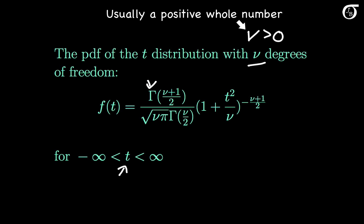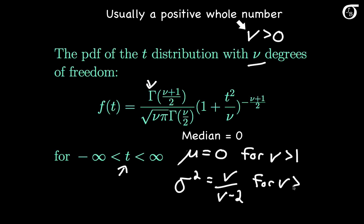We'll take a look at a few plots in a moment, but a few things to take note of now. The median of the t-distribution is 0. For the mean and variance there are a couple of technical restrictions. The mean of the t-distribution μ is equal to 0, as long as the degrees of freedom ν is greater than 1, otherwise it's undefined. And the variance of the t-distribution is equal to ν over ν-2, as long as ν is greater than 2.